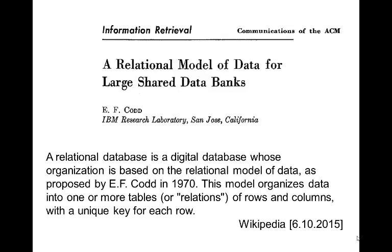Then in 1970, EF Codd, who worked at IBM in California, published a paper in the Communications of the ACM. I've put the paper up on the study space — it's actually readable. In that paper, he proposed basically the relational model, or the beginnings of the relational model. I've taken a definition off Wikipedia: a digital database whose organisation is based on the relational model of data proposed by Codd in 1970. This model organises data into one or more tables of rows and columns with a unique key for each row.